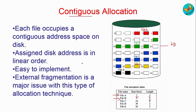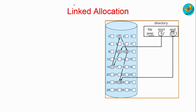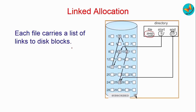The second method is linked allocation. Here, consider a file called 'zip' — its start block is 9 and it ends at block number 25. The blocks do not need to be adjacent to each other as in contiguous allocation. Instead, they are linked together by links, which group together all the blocks of the required file, and a list of links is required for this type of allocation.